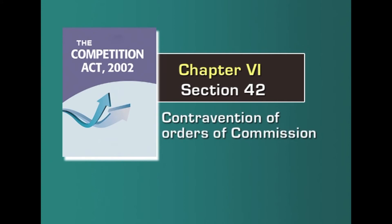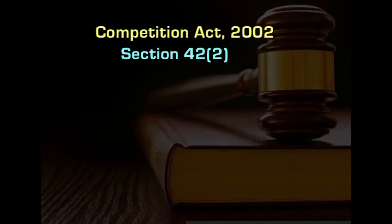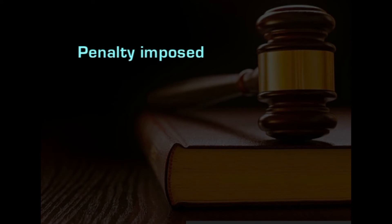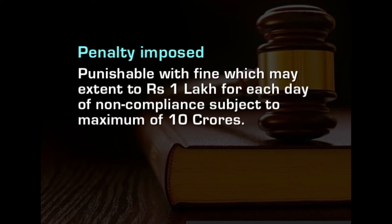To begin with, section 42 talks about contravention of orders of the commission. Under subsection 2 of section 42, any person who fails to comply with the directions or the orders of the commission issued under sections 27, 28, 31, 32, 42, and 43 would be considered as contravening the provisions of the act. The penalty imposed for contravening these provisions is punishable with a fine which may extend to rupees 1 lakh for each day of non-compliance, subject to a maximum of rupees 10 crores.